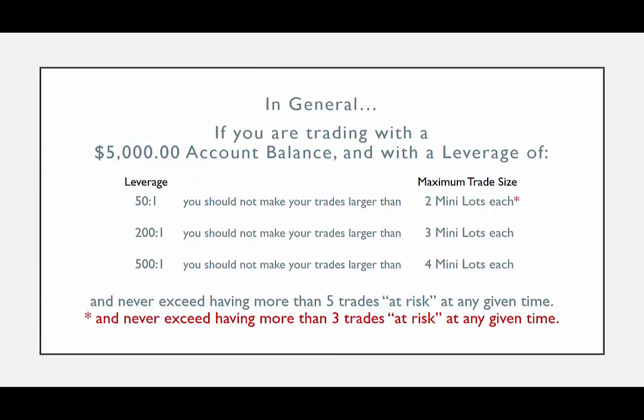In general, if you are trading with a $5,000 account balance and with a leverage of 50 to 1, you should not make your trades larger than 2 mini lots each and you should limit the number of trades to a maximum of 3 at risk at any given time. If you are trading with a leverage of 200 to 1, you should not make your trades larger than 3 mini lots each and you should not exceed a maximum of 5 trades at risk at any given time. If you are trading with a leverage of 500 to 1, you should not make your trades larger than 4 mini lots each and you should not exceed a maximum of 5 trades at risk at any given time.